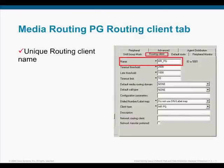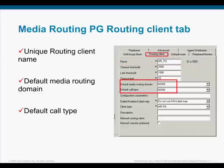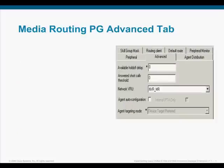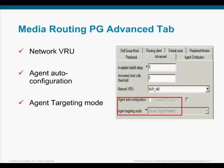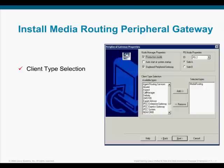Navigate to the Routing Client tab. We will need to configure a unique routing client name for this PG. Leave the default media routing domain and the default call type as None. Fill in the client type as MRPG. Now select the Advanced tab from the Media Routing PG configuration. Select the Network VRU that we configured earlier for this Media Routing PG. The Agent Auto Configuration box should be left unchecked. Remember, agents are not configured on an MRPG. The integration will support both Agent Targeting Mode or Device Target Mode. By default, the MRPG will use the mode that is configured on the Agent PG associated with this integration.